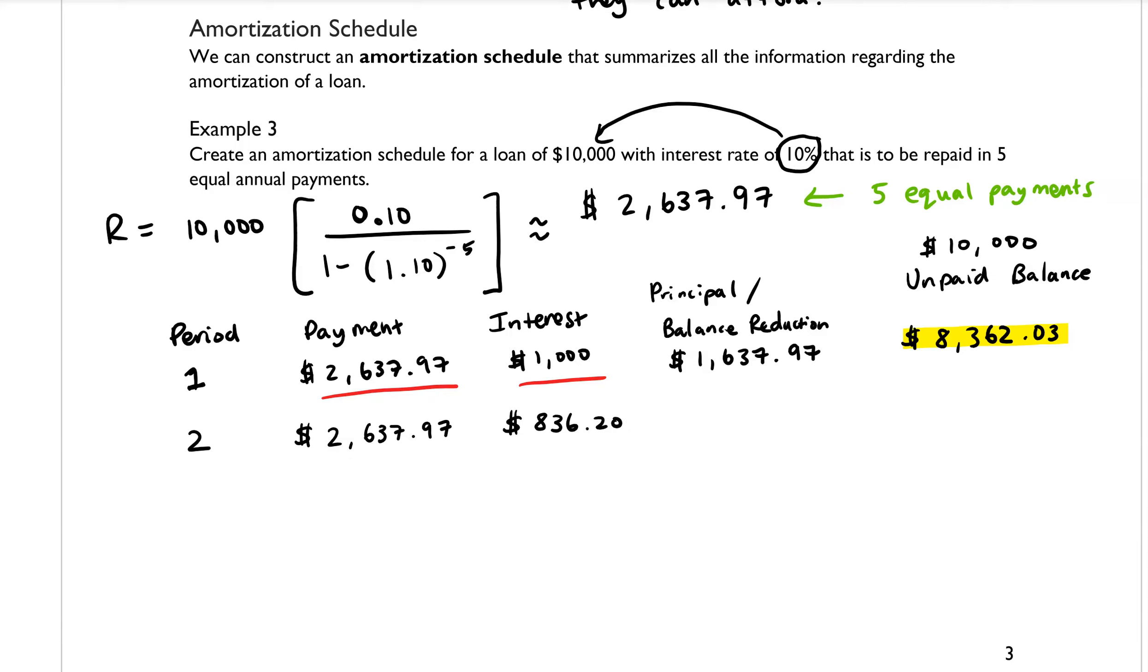So just like we did in the previous version, to get the new principal or balance reduction amount, we would take the regular payment amount and subtract the interest amount. And if we do that, then we get $1,801.77.